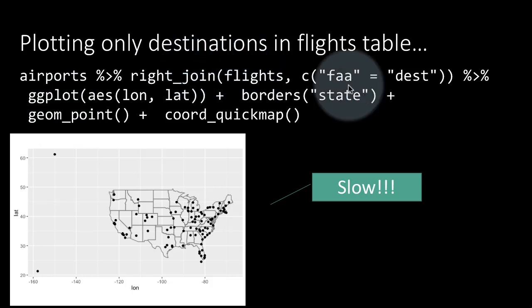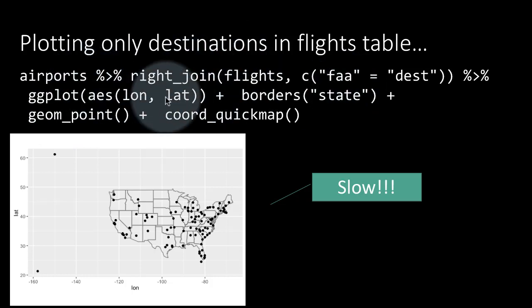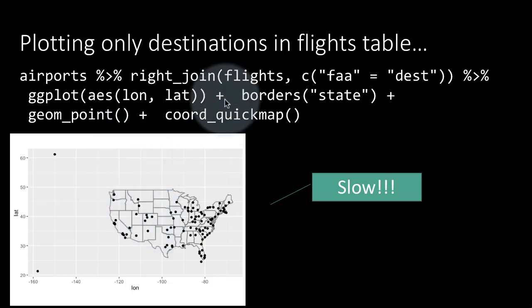And what we are doing is we are just plotting the latitude and longitude from the airports table. But we are plotting 336,000 points. So what is really happening is that each of these points is actually overplotted heavily, right? Because we are plotting 337,000 points, but there are only about 100 distinct points. So each one of these points has been plotted many, many times over.